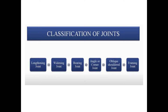Classification of joints from a syllabus point of view — you will learn different classifications: lengthening joint, widening joint, bearing joint, angle or corner joint, oblique shoulder joint, and framing joint.